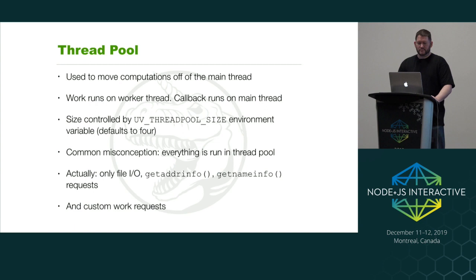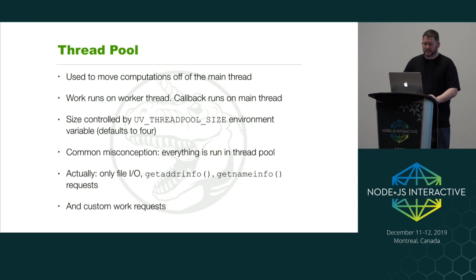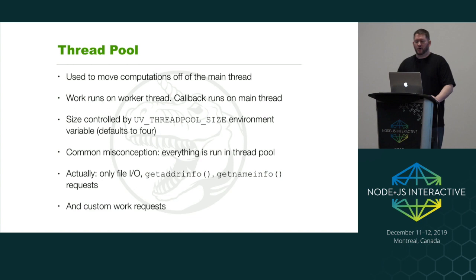One of the more famous things we get from LibUV is the thread pool. The whole point is to move computations off the main thread. JavaScript, with the exception of workers, is single-threaded — in a server application you could have hundreds or thousands of requests being processed simultaneously, and if everything ran on just the main thread, things would slow down quickly. A common misconception is that everything runs in the thread pool — that's wrong. Only file IO, DNS lookups (getaddrinfo and getnameinfo), and custom work a user offloads are the only things that actually run in the thread pool.